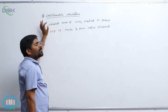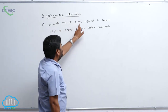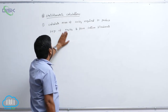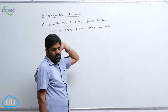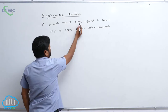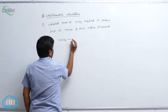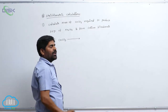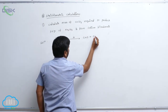One more important problem of stoichiometric calculations: calculate the mass of calcium carbonate required to produce 212 grams of sodium carbonate — or rather, sodium bicarbonate. First, consider the decomposition of calcium carbonate: CaCO₃ decomposes into calcium oxide (CaO) plus carbon dioxide (CO₂).